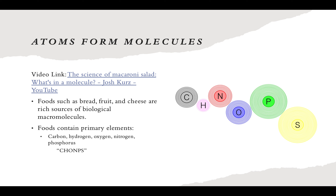This slide digs more into information from the last couple of chapters. It's titled 'Atoms Form Molecules,' and there's a video link called 'The Science of Macaroni Salad: What's in a Molecule?' which talks about molecules found in different foods. Foods such as bread, fruit, and cheese are rich sources of macromolecules and contain the primary elements from the acronym CHOMPS: carbon, hydrogen, oxygen, nitrogen, phosphorus, and sulfur.